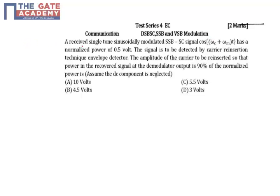Just read the question. A received single-tone sinusoidal modulated SSB-SC signal is cos(ωc + ωm)t, and it has a normalized power of 0.5 volt. The SSB-SC signal is transmitted with equation cos(ωc + ωm)t, and the normalized power given is 0.5.